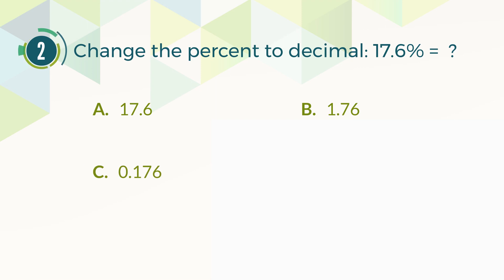Number 2. Change 17.6% to decimal. A: 17.6. B: 1.76. C: 0.176. D: 0.0176. The correct answer is C, 0.176.